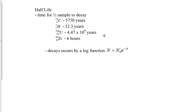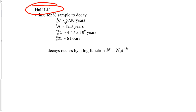Welcome back to the Turd Ferg show. Today's topic is radioactive elements and half-lives. Most people have a general idea of what a half-life means. Every element has its own unique half-life — for example, Carbon-14 has a half-life of 5,730 years. Uranium has a massive half-life, while Technetium on the other hand has a six-hour half-life.